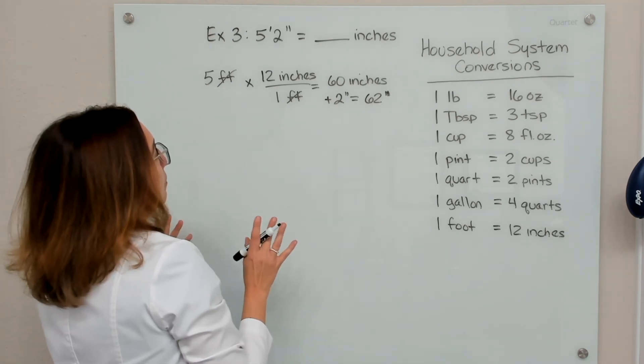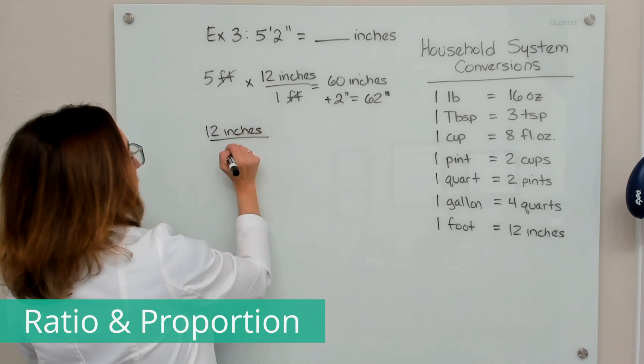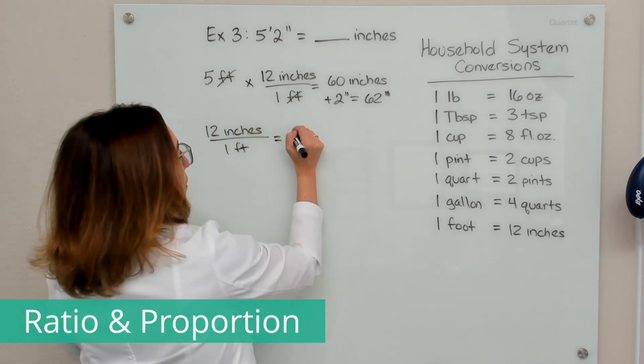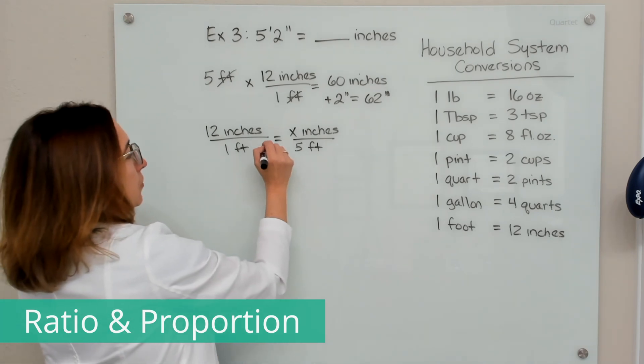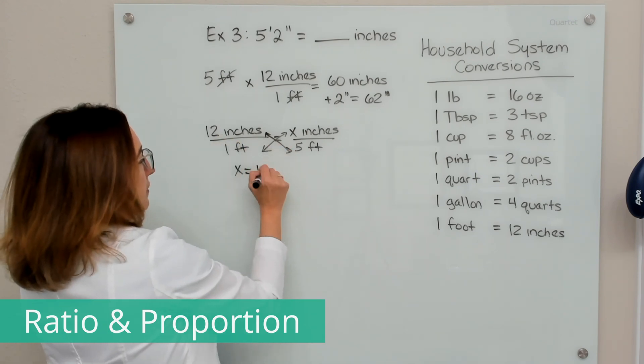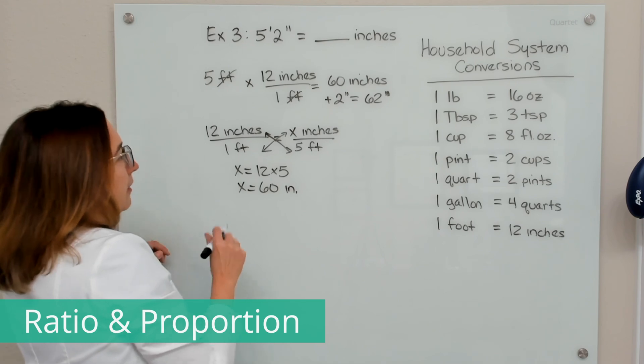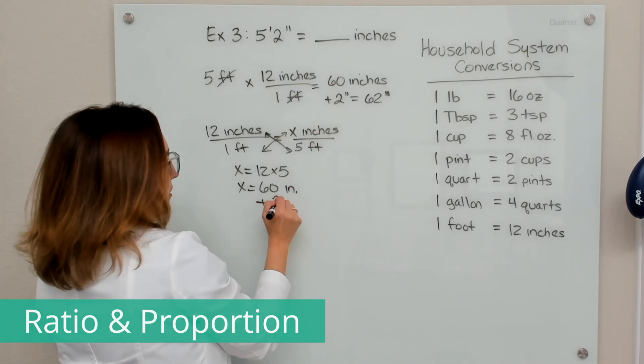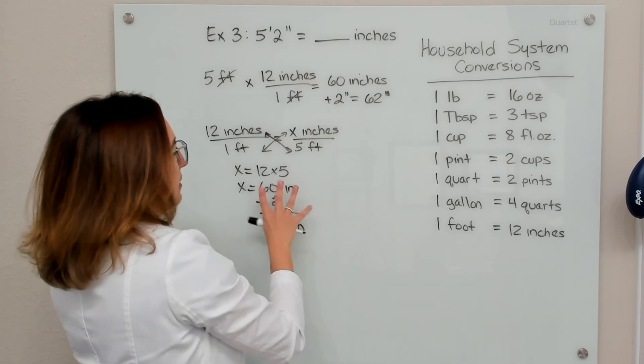All right, let's solve this same problem using ratio and proportion. So let's first write down the known ratio, the thing that we know to be true. 12 inches equals one foot. So that is the known ratio. And then on this side, we want to know how many inches are in five feet. And we're going to cross multiply here. So one times x is just x. And then we have 12 times five. And that equals 60. So again, that's how many inches are in five feet. But we are being asked how many inches are in five feet, two inches. So we need to add that additional two inches to get 62 inches. And that's how you would solve that problem using dimensional analysis and ratio and proportion.